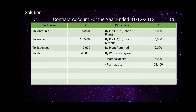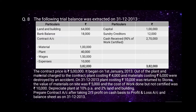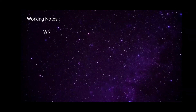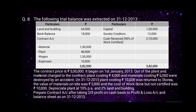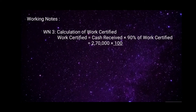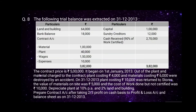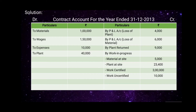Plant at site of rupees 23,400 is recorded on the credit side. Working Note 3 — Calculation of Work Certified: cash received equals 90 percent of work certified, so work certified equals rupees 2,70,000 multiplied by 100 divided by 90, which equals rupees 3 lakhs. Work certified rupees 3 lakhs and work uncertified rupees 10,000 are both recorded on the credit side.